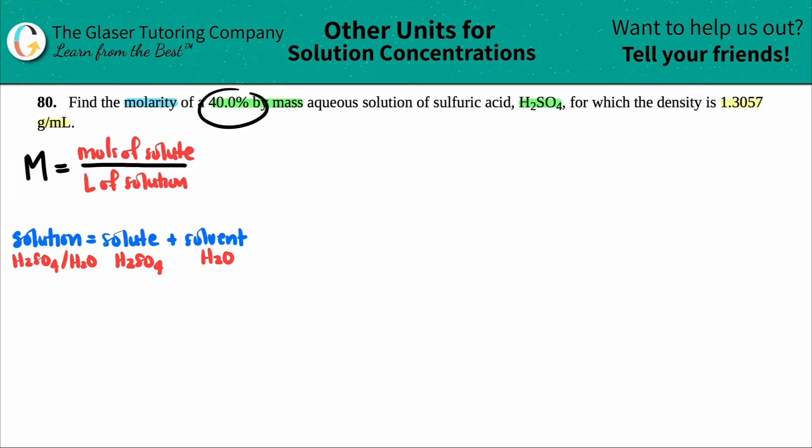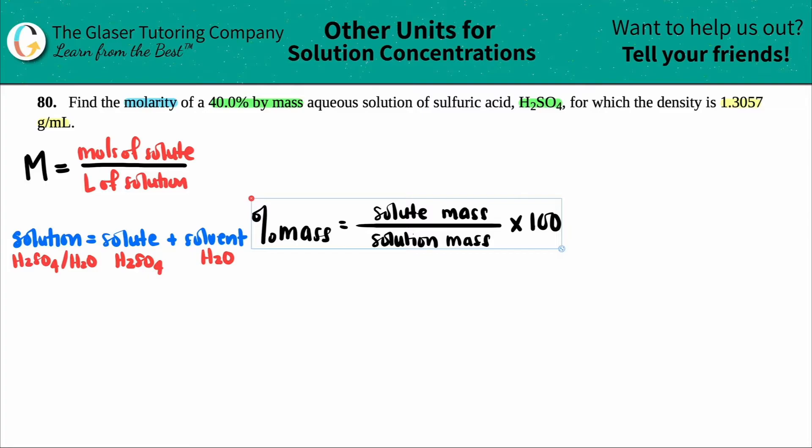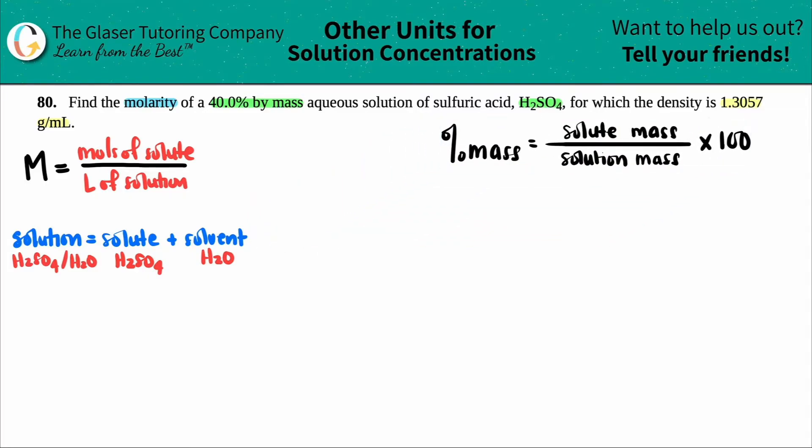Let's talk about percent mass. Percents by themselves are just part over whole. We were talking about a part and a whole. The total is the solution, and the part can either be the solute or the solvent.